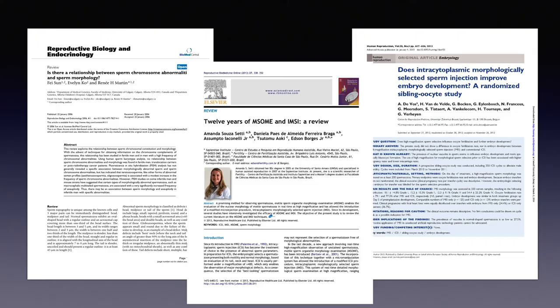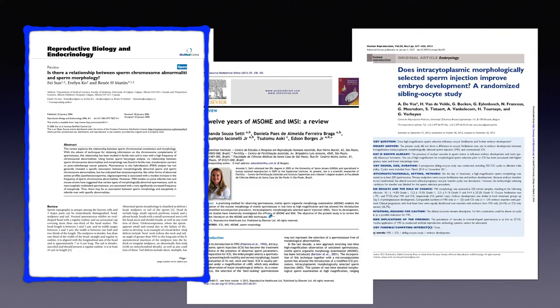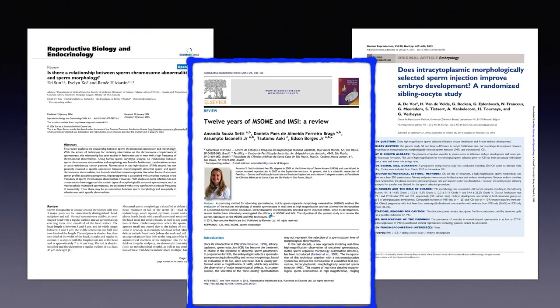Previous studies have demonstrated that abnormal semen profiles are associated with a modest increase in the frequency of sperm chromosomal abnormalities. Similarly, others have shown that morphologically abnormal spermatozoa, specifically sperm with aberrations in the shape and contours of the head, may be carriers of chromatinic defects.